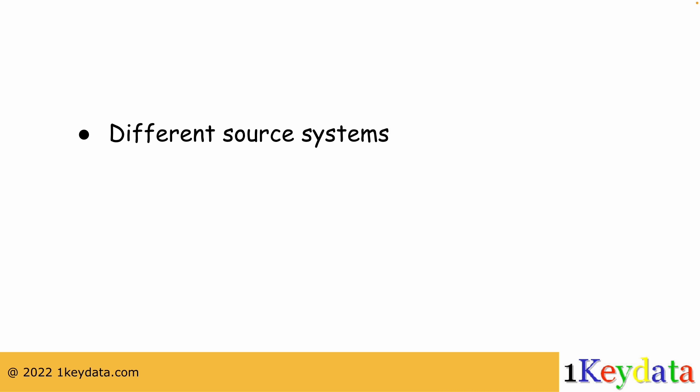For example, you have an inventory system that is not connected to the system you used to track sales. So products are tracked differently across the two systems. Now if you simply move everything into your data warehouse, you will not have a conformed product dimension.